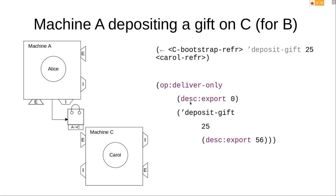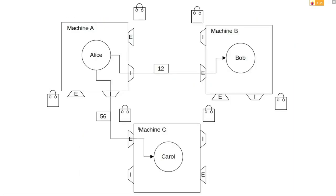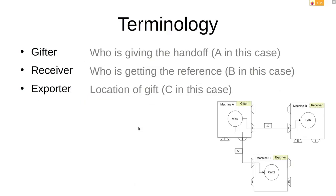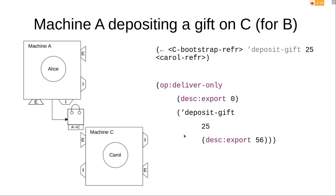The bootstrap reference is always at position zero. The method is just the first argument — there's nothing special about methods in Goblins. 25 is the gift ID. The integer 56 is the reference to Carol. Something worth noting: A sends this first, but C might not necessarily receive it right away. The reason A sends it first is that machine A needs the gift ID to perform the next step.